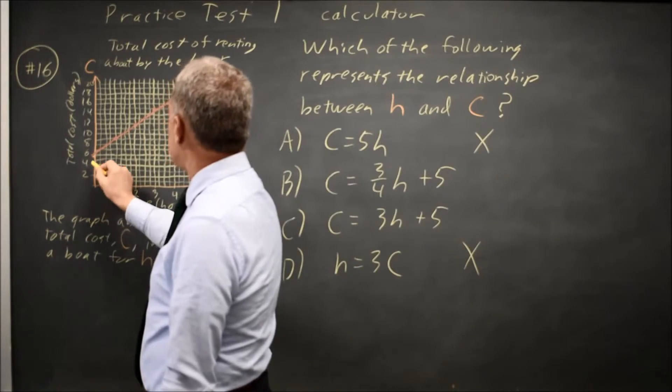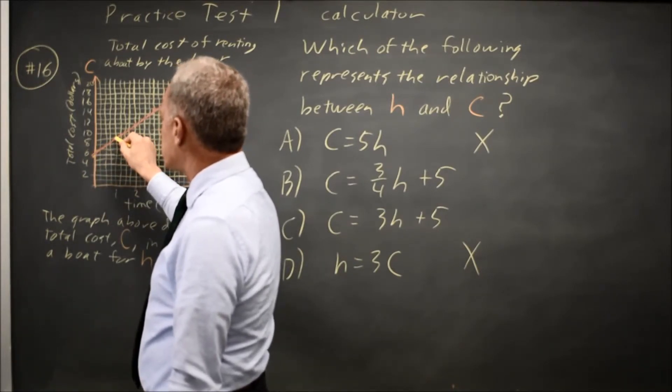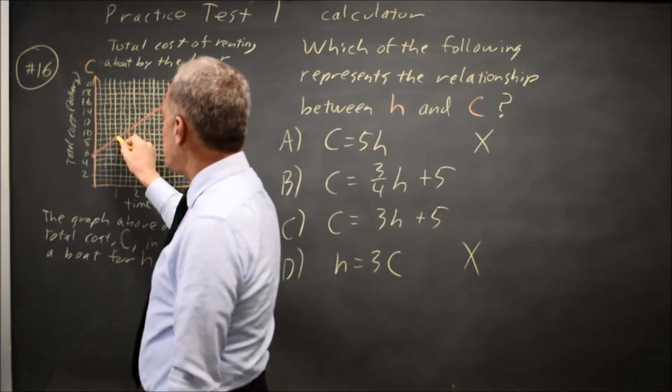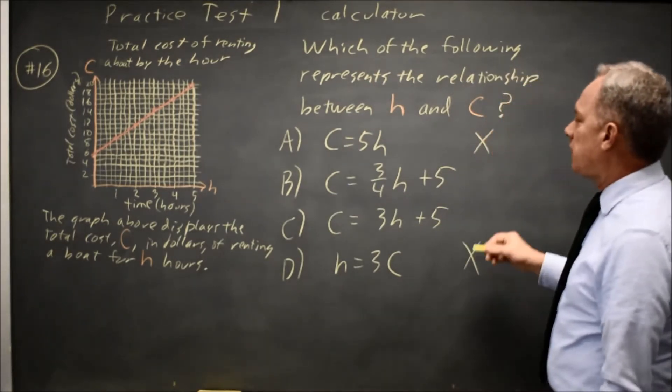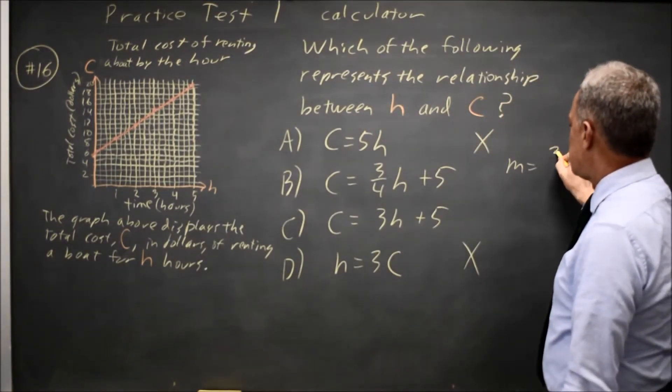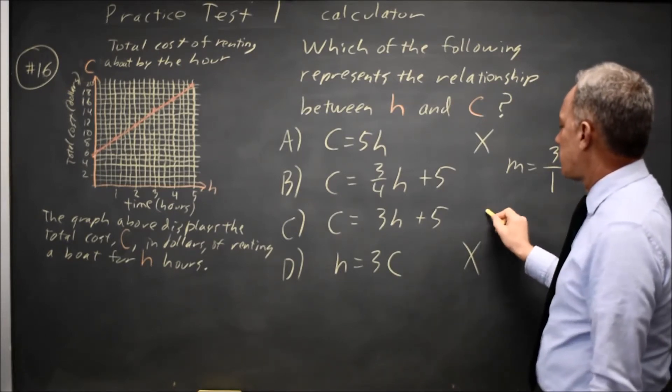Going from this point, H equals 0, to this point with H equals 1, my change in C is 3, my change in X in H is 1, so my slope is the change in C over the change in H is 3, not 3 fourths.